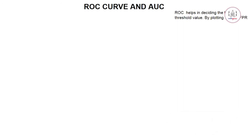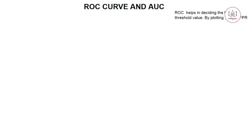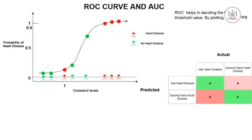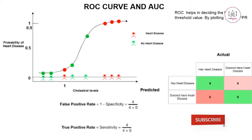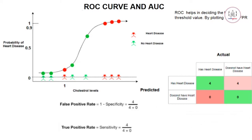ROC helps in deciding the best threshold value by plotting the true positive rate versus the false positive rate. Let's start with a threshold of zero, where we say that all the patients have heart disease. We draw a confusion matrix and calculate the false positive rate and true positive rate. Here the false positive rate, which is 1 minus specificity, equals 4 divided by (4 plus 0), which comes out to 1.